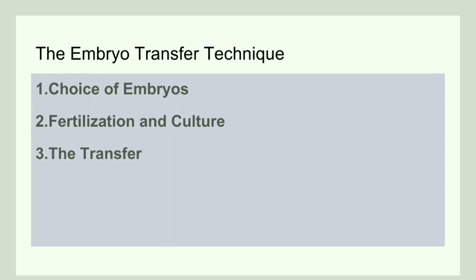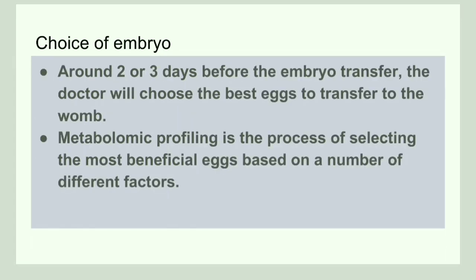Next, we will discuss embryo transfer techniques, which are basically divided into three steps: first, choice of embryo; second, fertilization and culture; third, the transfer. The first step is choice of embryo — we choose the best eggs 2 to 3 days before the embryo transfer based on metabolomic profiling, which is the process of selecting the best beneficial eggs out of many.